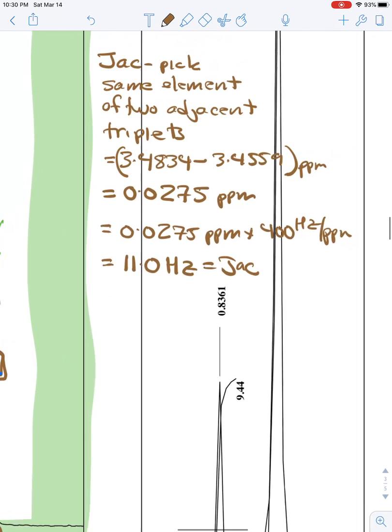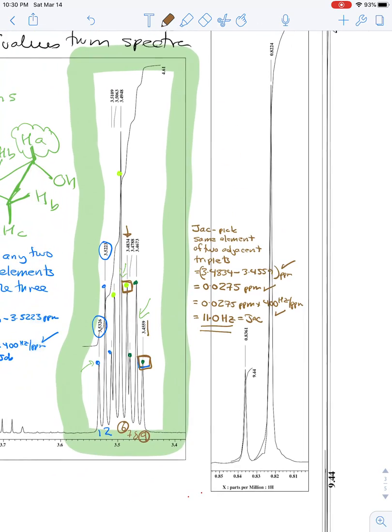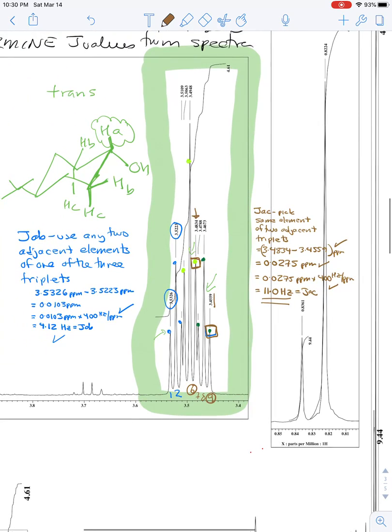And so we're going to subtract those two values, just as we did before, get the difference between them in parts per million, multiply that by 400 hertz, and that gives us a value of 11 hertz for JAC. And again, that's what we expect. And notice again, it's significantly larger than the coupling constant value for JAB.